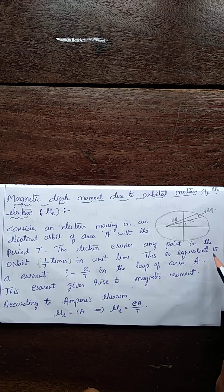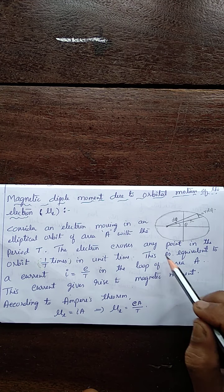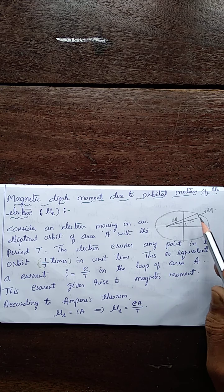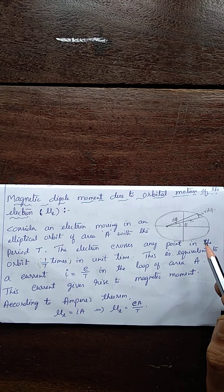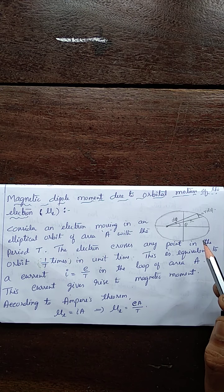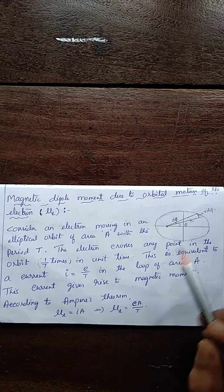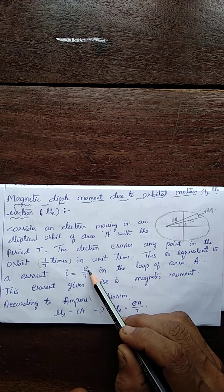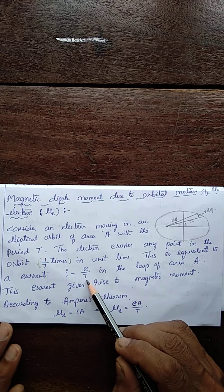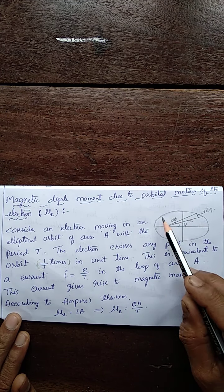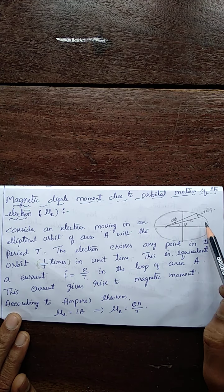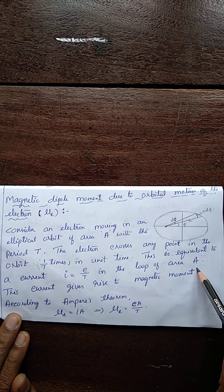This motion of the electron in the orbit is equivalent to a current i. Current i is the rate of change of charge, so here i is e/T — e being the charge of the electron and T the time taken by the electron to revolve in the loop of area A.